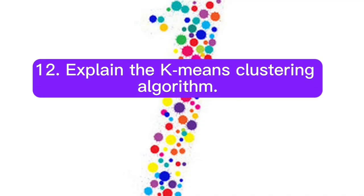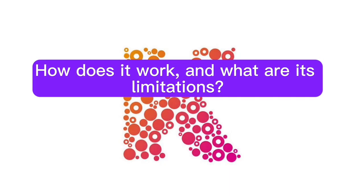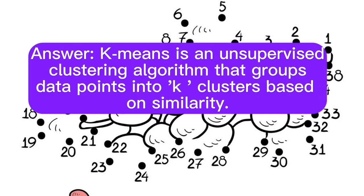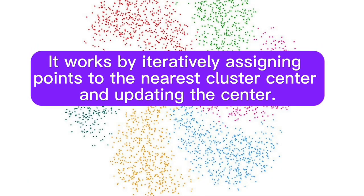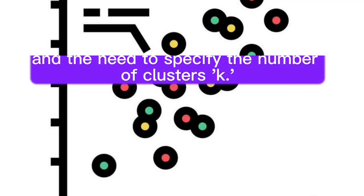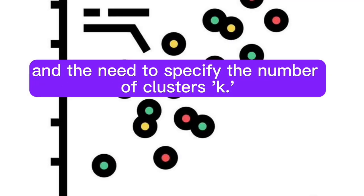Question 12: Explain the K-means clustering algorithm. How does it work, and what are its limitations? Answer: K-means is an unsupervised clustering algorithm that groups data points into K clusters based on similarity. It works by iteratively assigning points to the nearest cluster center and updating the center. Its limitations include sensitivity to initializations, difficulties with non-spherical clusters, and the need to specify the number of clusters K.